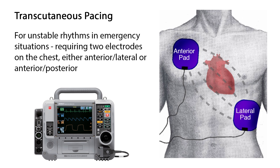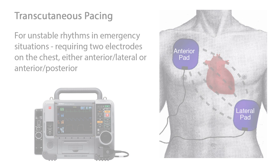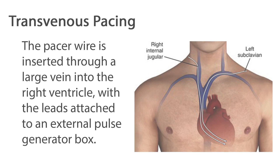Transcutaneous external pacing is primarily for unstable rhythms in emergency situations, requiring two electrodes on the chest, either in the anterior-lateral position or the anterior-posterior position. With a transvenous pacemaker, the pacer wire is inserted through a large vein into the right ventricle, with the leads attached to an external pulse generator box.